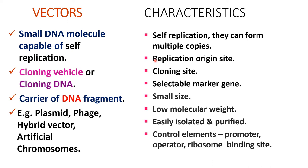Vectors consist of a replication origin site, cloning site, selectable marker genes, and they are usually small in size with low molecular weight, so they can be easily isolated and purified. They also consist of control elements like promoter, operator, and ribosome binding site, which are usually present in expression vectors.